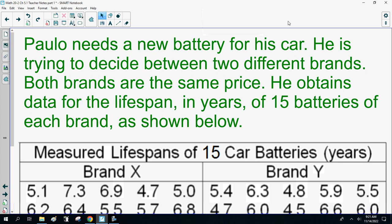Apollo needs a new battery for his car. He's trying to decide between two different brands. Both brands are the same price. He obtains data for the lifespan in years of 15 batteries of each brand as shown below. Measured lifespan batteries.